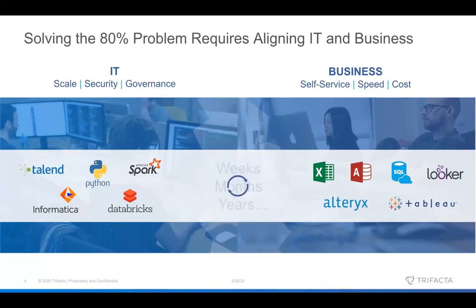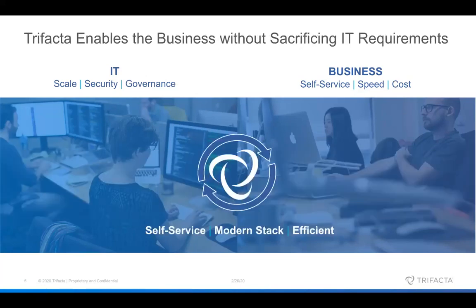Trifacta fills in this gap by providing the best of both worlds. Trifacta combines visual and machine learning guidance, making it easier for non-technical users to discover the contents of your data, clean that data, and structure and blend that data. All of this process you're doing in Trifacta is stored in a recipe that can be compiled and run on infrastructure in the cloud to run on data at any scale. These recipes can be orchestrated through data pipelines to get continuous value from your analytics projects — you get the visual ease of use familiar from tools like Excel, but also the automation capabilities of code and ETL.